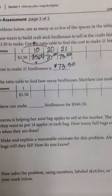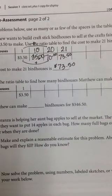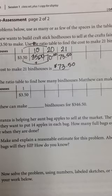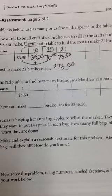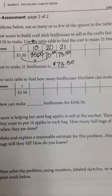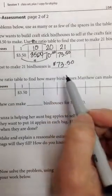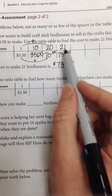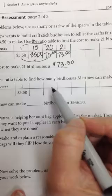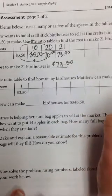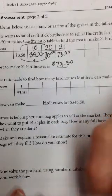Okay, so for the next one, use the ratio table to find out how many birdhouses Matthew can make for $346.50. Well, I already have 21 houses is $73.50. So I can use this information from this ratio table to keep building, but I need to get to $346.50.